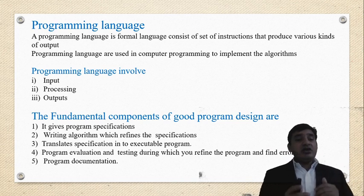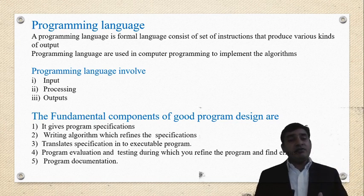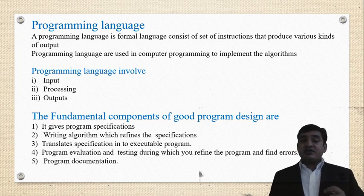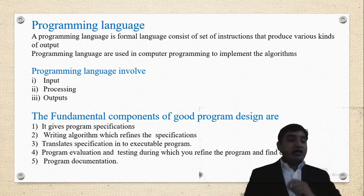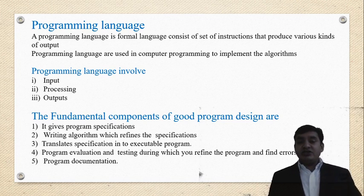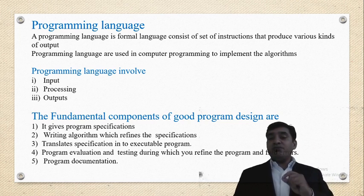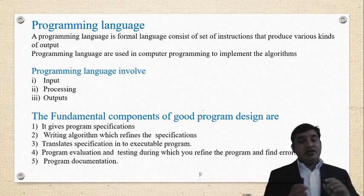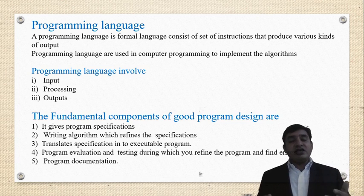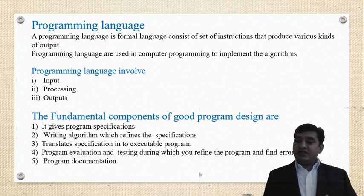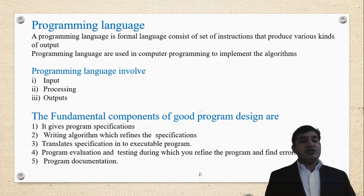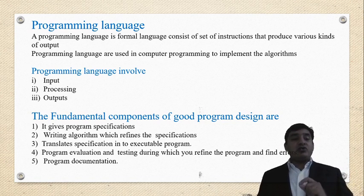The algorithm or flowchart develops the logic of a programmer so that we can translate the specification into an executable program. Program execution and testing, during which you refine the program and find errors. We can use debugging — that is, to remove the error — and after that there must be good program documentation.